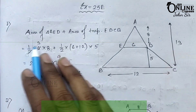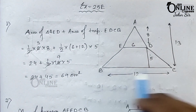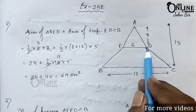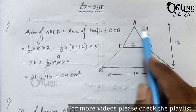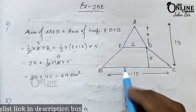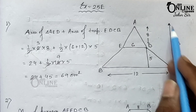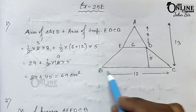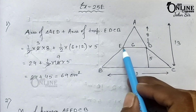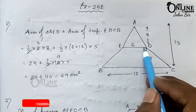In the first problem, find the area of the following polygons. The first diagram shows polygon AEBCD. Here ED equals 6 centimeters, the perpendicular height AD equals 8 centimeters, BC equals 12 centimeters, and the perpendicular height from A to C equals 13 centimeters. You can divide this polygon into two parts: the upper part AED is a triangle, and the lower part EBCD is a trapezium.